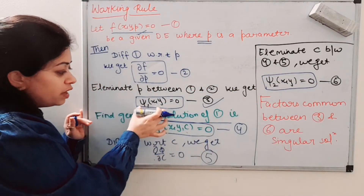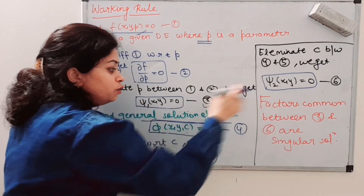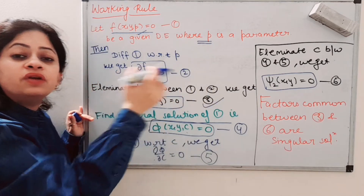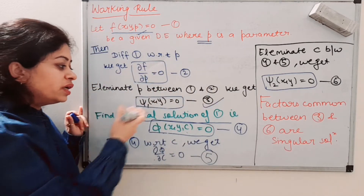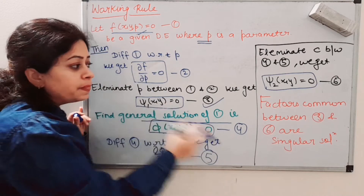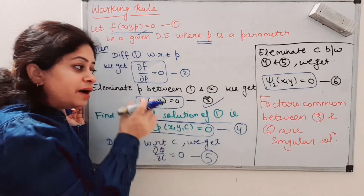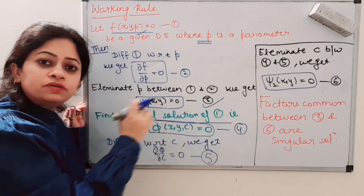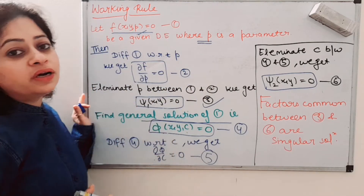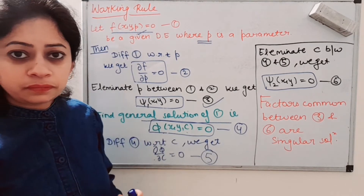You will again get a function of x and y. From eliminating p you got a function of x and y, and from eliminating c you are getting another function of x and y. You will then find the common solution between these two. Suppose from one you get y = 0 and y = 2, and from the other you get y = 0 and y = 3 — then y = 0 is the common solution. That common solution will be the singular solution. This is the method.